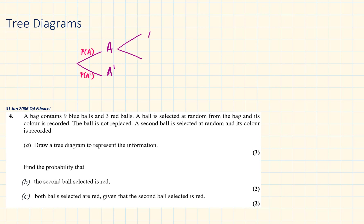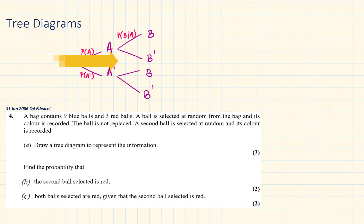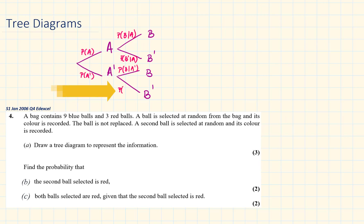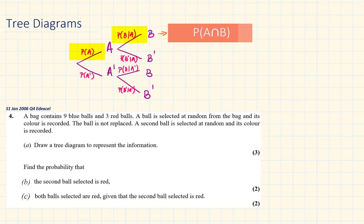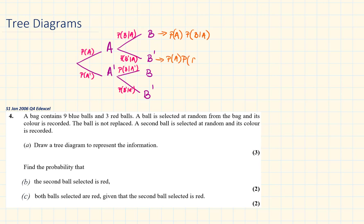Let's also have event B, so the two scenarios are B happening and B not happening. The events are written at the end of the branches. Since A has already happened, this branch represents the probability of B given that A has happened. Then the probability of B not happening given that A has already happened. The third branch represents the probability of B given that A has not happened, and the probability of B not happening given that A is not happening. Going along the branches we multiply the probabilities, so the intersection of A and B equals the probability of A times the probability of B given that A has happened.